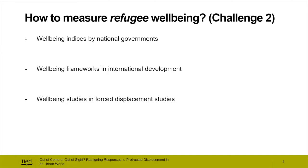The second challenge was to go from discussing wellbeing measurements in general to understanding refugee wellbeing more specifically. This was a challenge because there has been very little work on wellbeing in forced displacement. While there are several interesting single studies, there is not a cohesive body of work or a framework for wellbeing in situations of displacement as yet. To develop refugee wellbeing measurements, we looked at three sets of indices: wellbeing indices by national governments, wellbeing frameworks used in international development research, and wellbeing studies in forced displacement.